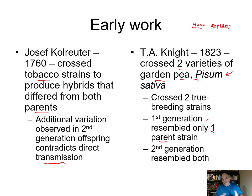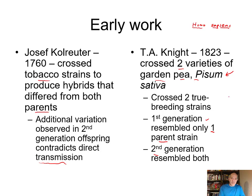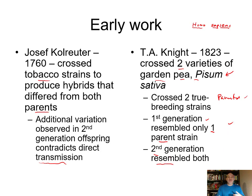This does not support blending — if it was blending, the offspring should look like both parents. Then he took those offspring and bred them again to a second generation, and found that both traits reappeared. One of the traits disappeared in the first cross, then came back again. This strongly contradicts the blending hypothesis.